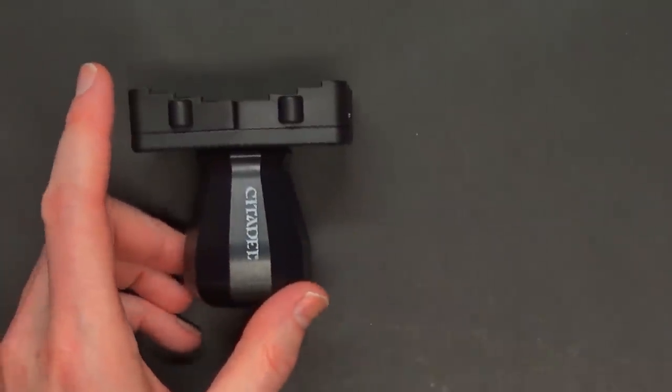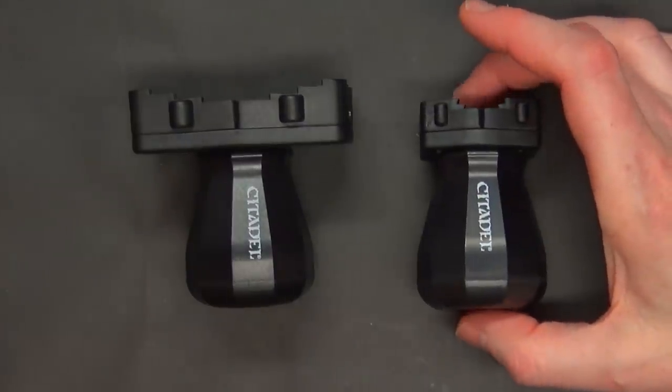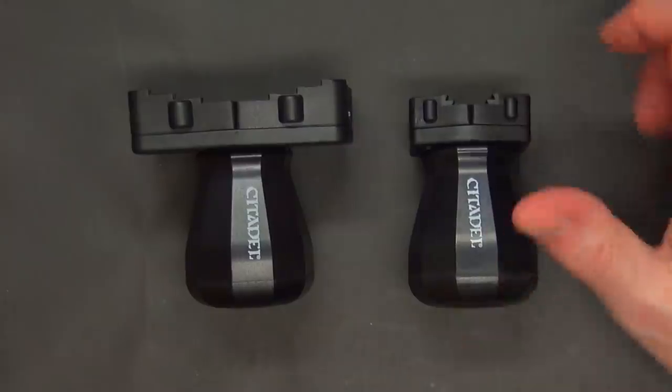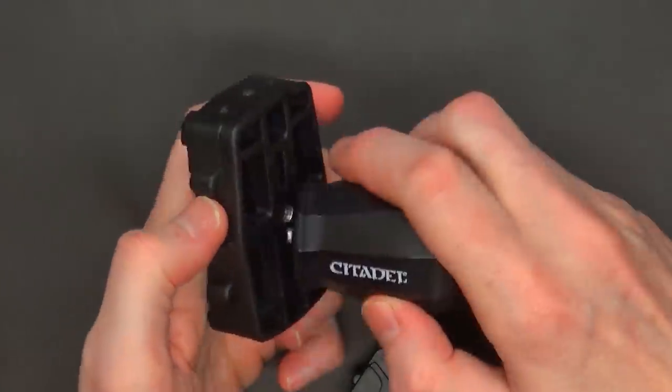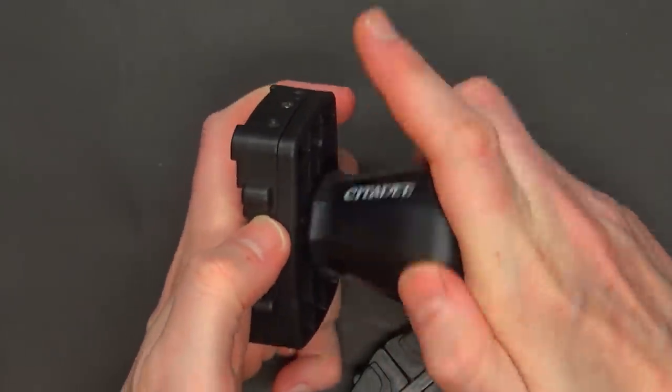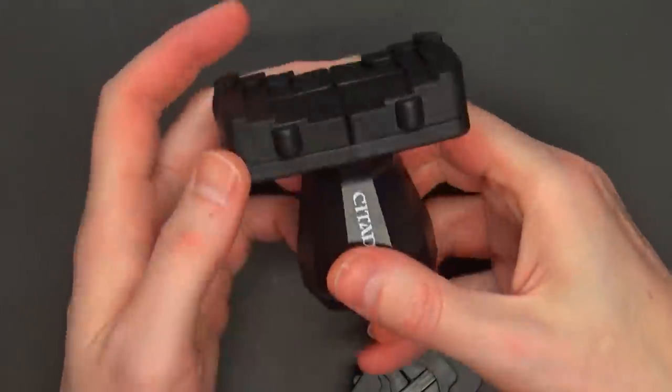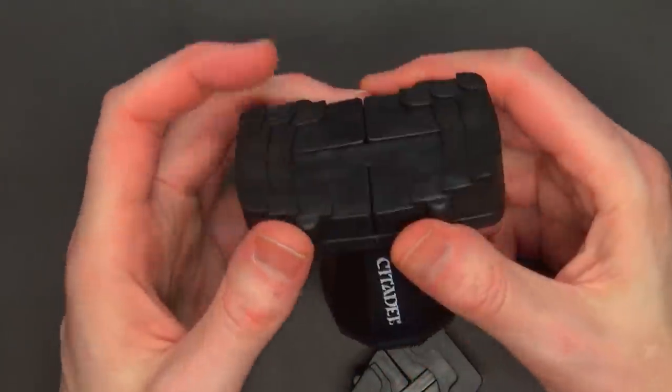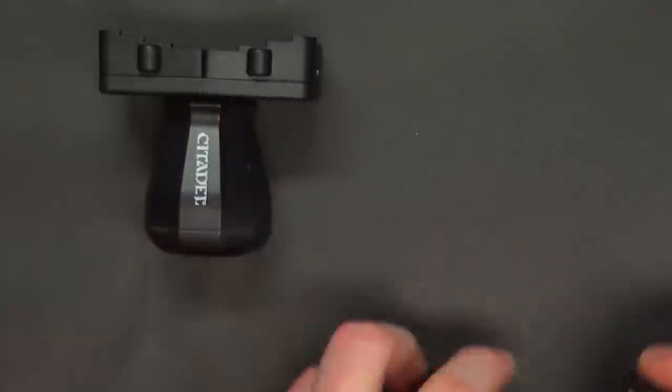Now first off, this is the XL. It goes for $12.50. This is the old Citadel paint handle for $8 US. And yes, they are indeed interchangeable. As a matter of fact, that was the very first thing I tried. They could have just released the top by itself for less if you already had the handle. But no, you gotta rebuy the handle.